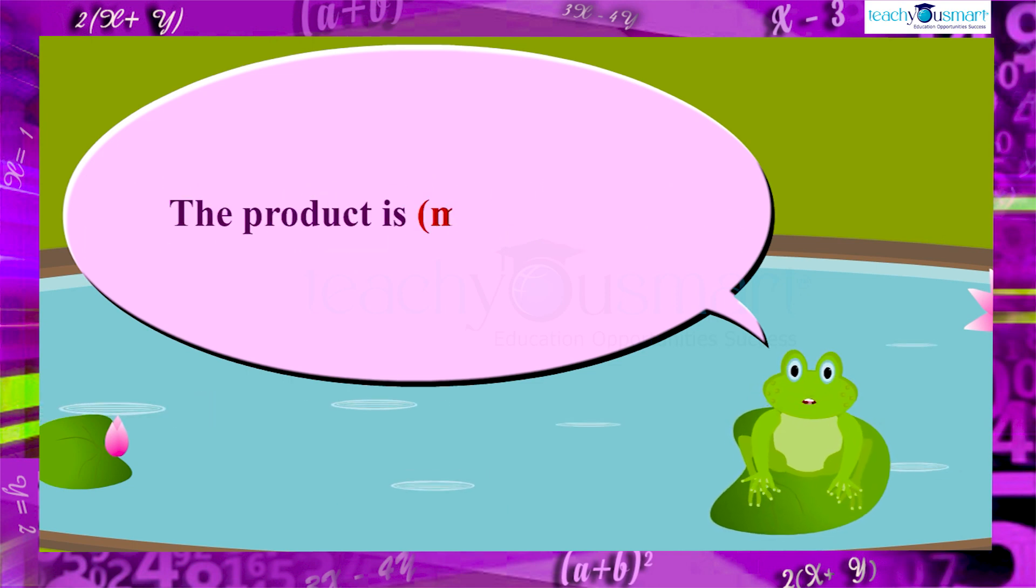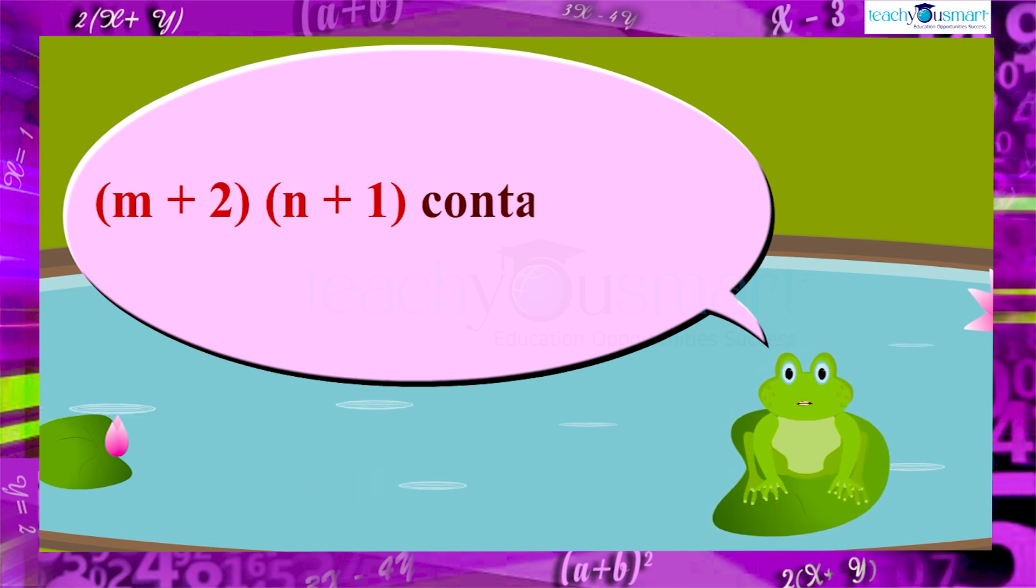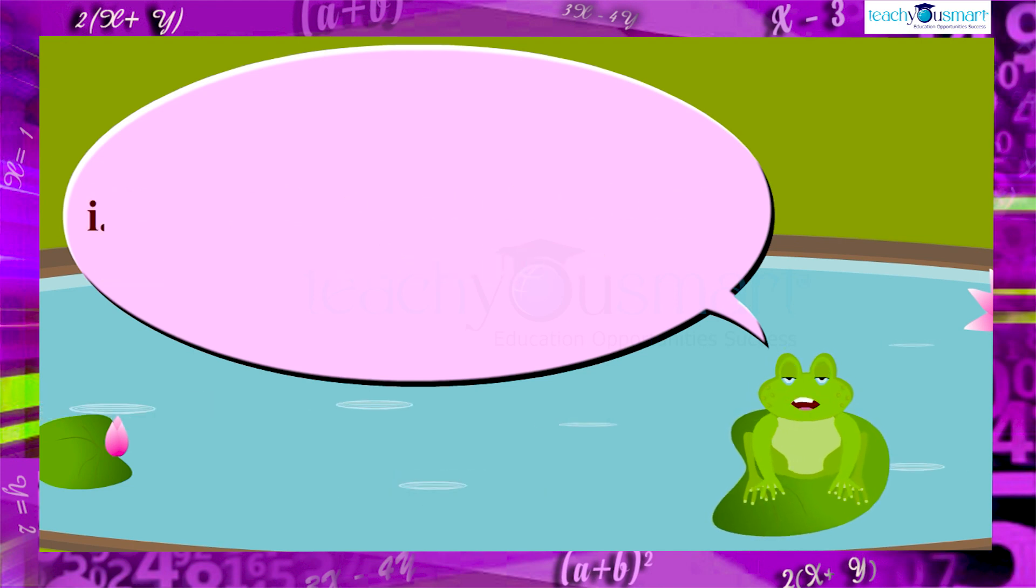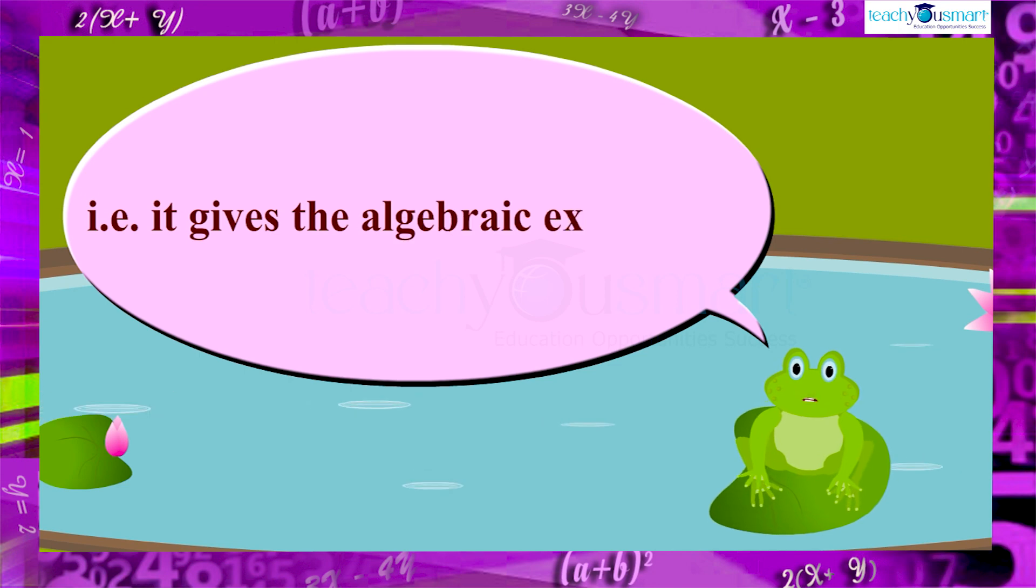And the product is M plus 2 multiplied by N plus 1. It contains both constants and variables. That is, it gives the algebraic expression.